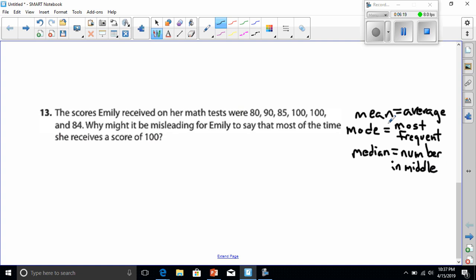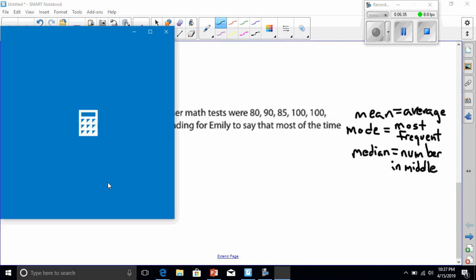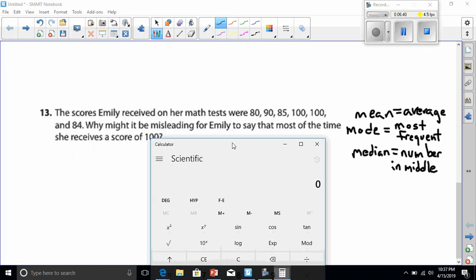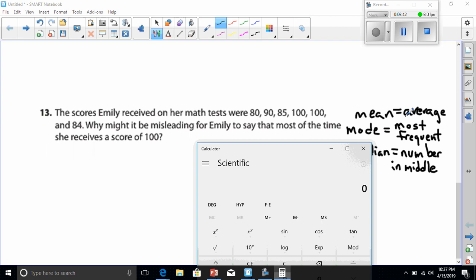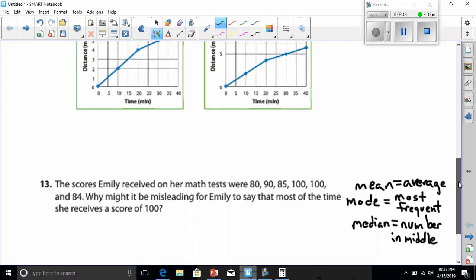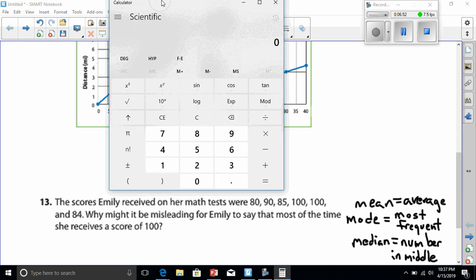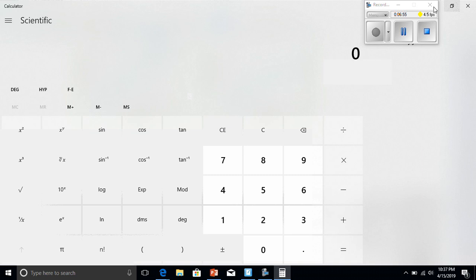All right, so let's see what each of these are. First, if I take the mean, which is the average, I have to take 80 plus 90 plus 85 plus 100 plus 100 plus 84 and divide it by 1, 2, 3, 4, 5, 6. Let's try that in our calculator. We're going to take these numbers here, put them in our calculator.